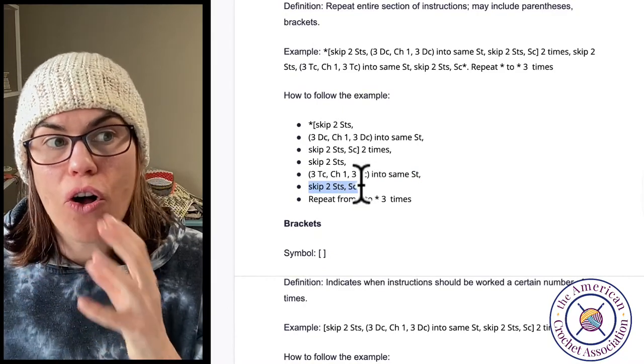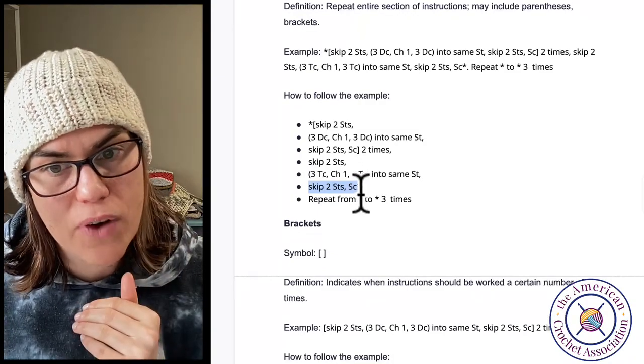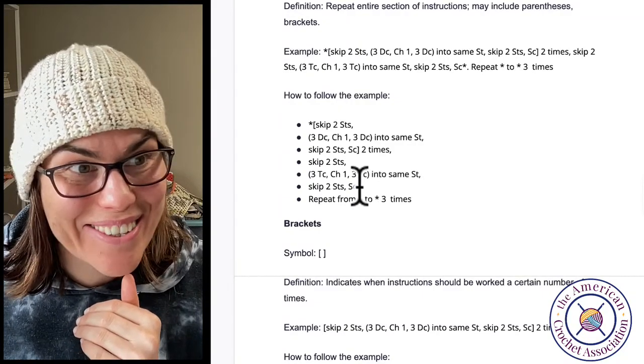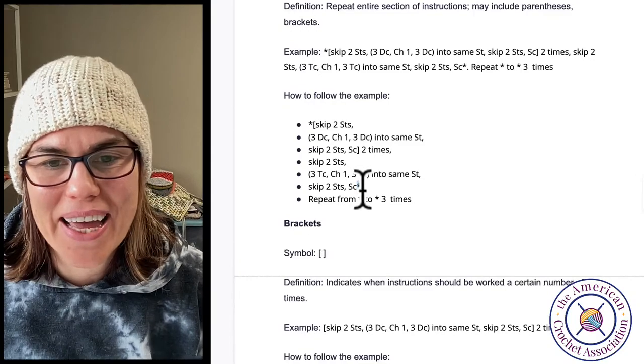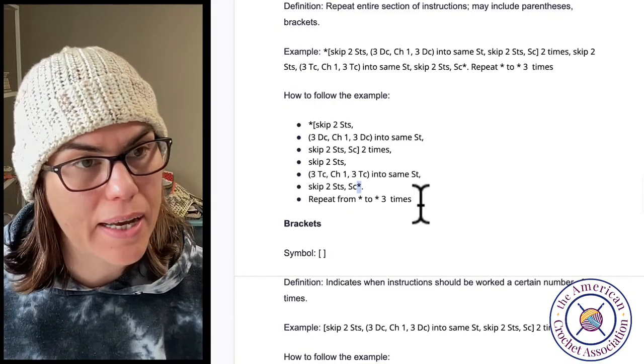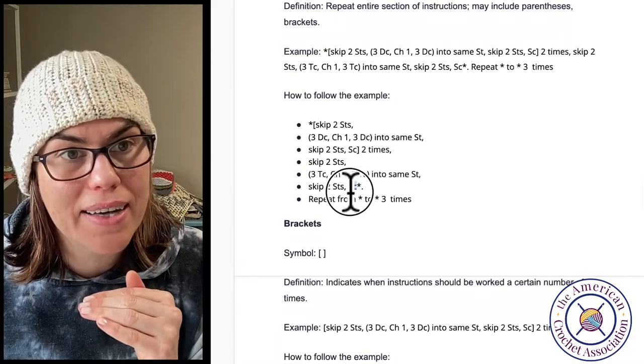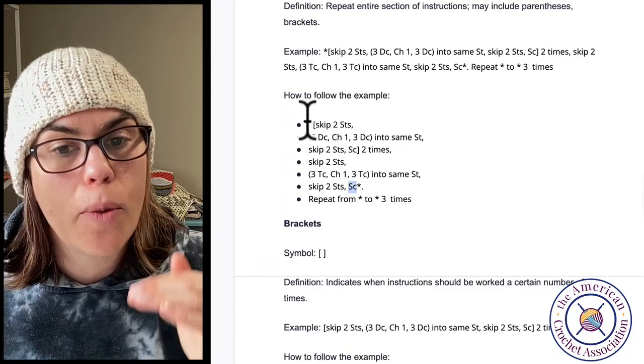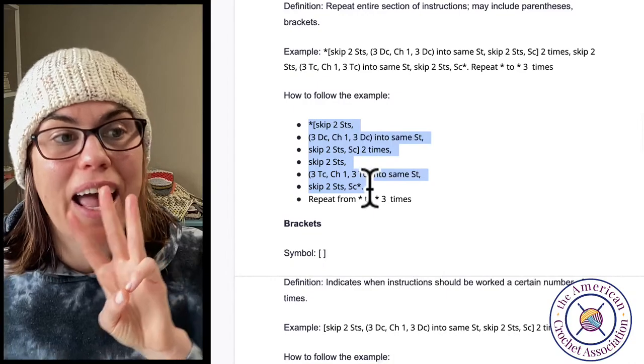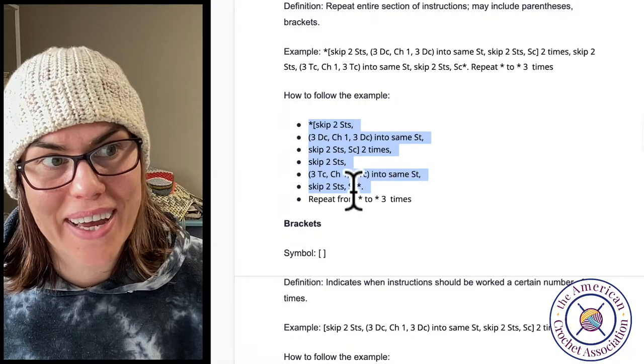Next piece of instruction, skip two stitches, skip two stitches, move on. Three triple crochet, chain one, three double triple crochet into same stitch. Did I do that? Great. Now I'm going to move on. Skip two stitches, single crochet, asterisk. So those are all the instructions in the asterisk and the brackets and the parentheses. So as soon as I follow all of that and I see that asterisk, my next bit of instructions say repeat from asterisk to asterisk three times.